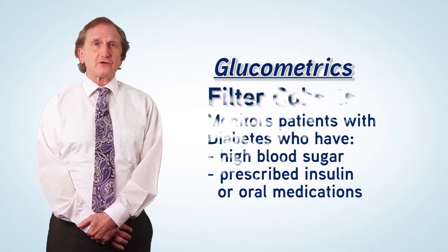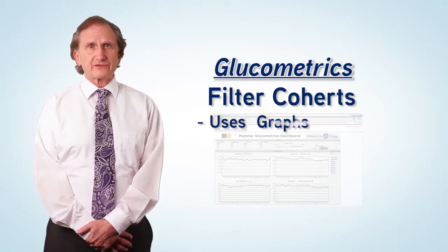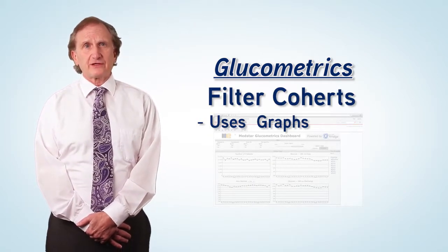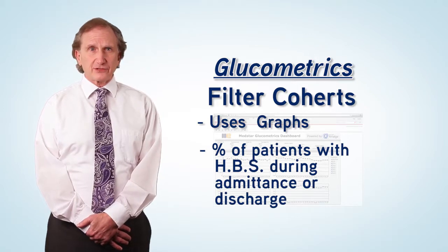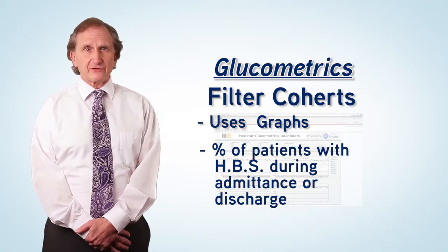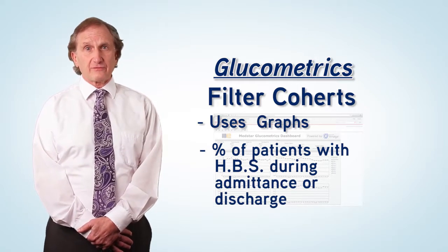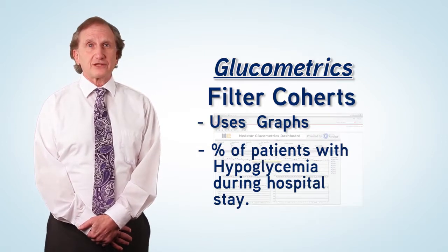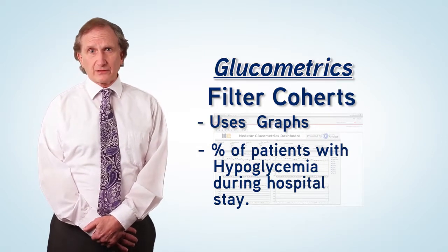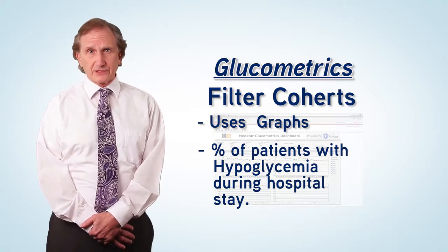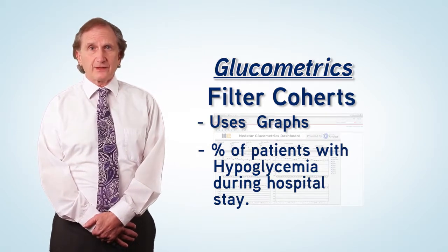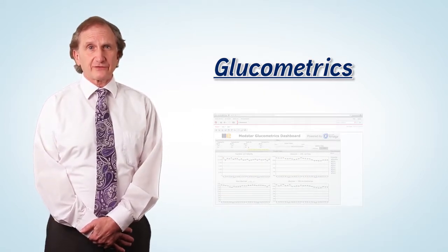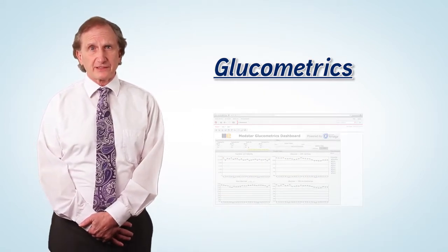Filtered cohorts are visualized through graphs that show the count of patients, the percent of patients exhibiting high blood sugar during their first day after admission or at discharge, or the percent of patients exhibiting hypoglycemia during the hospital stay. This graph can be adjusted to clearly show the critical levels physicians pay attention to.